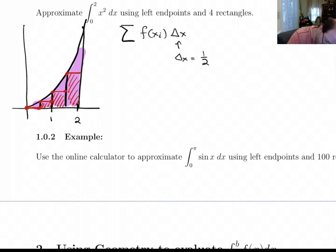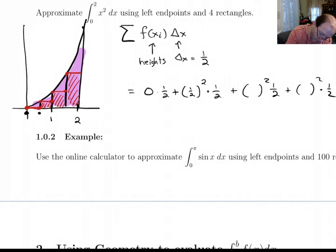Now the f of x i, those are the heights. The height of this first rectangle is obviously 0. For each of these, what we're doing is we're plugging in the left endpoint. So here we plug in 0, then we plug in 1 half, and then 1, then 3 halves. So that's going to give us the area.